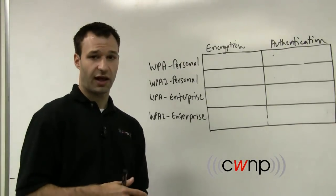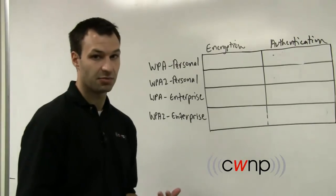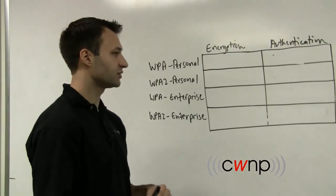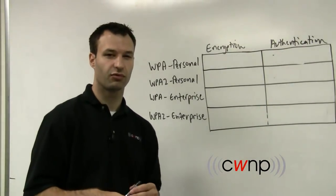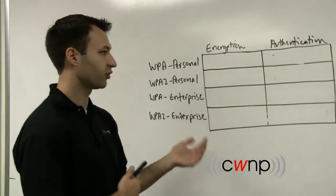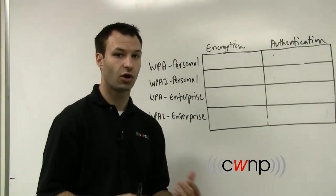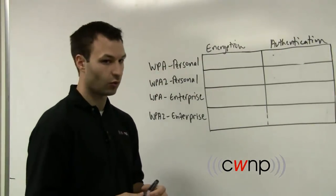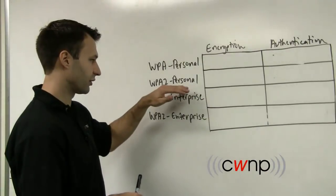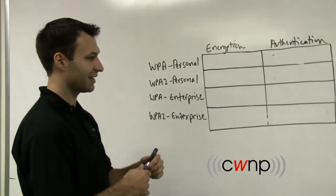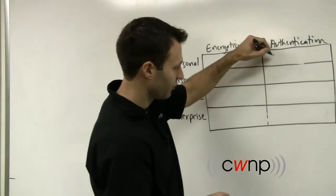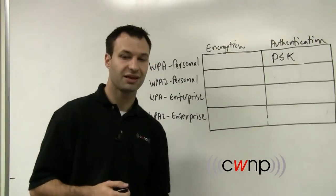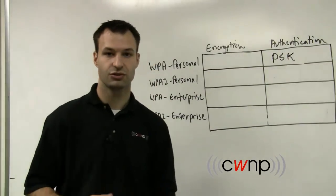The Wi-Fi Alliance adopted these certification names: WPA and WPA2 Personal and Enterprise. I've drawn a little chart here to go through what these terms mean and what type of encryption and authentication are used. Starting with WPA Personal — in personal modes of security, both WPA and WPA2, the authentication mode used is called a pre-shared key or PSK. In this implementation, PSK is 256 bits.